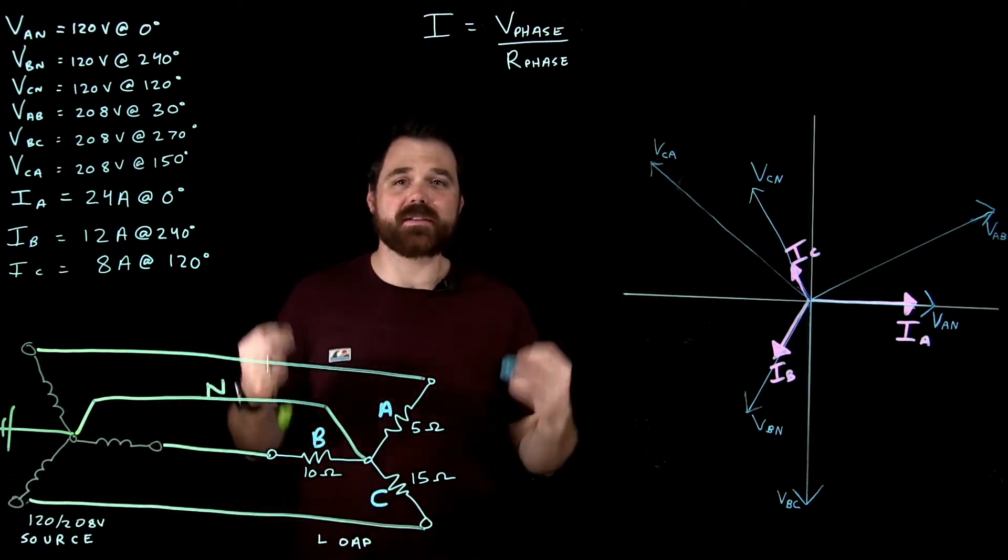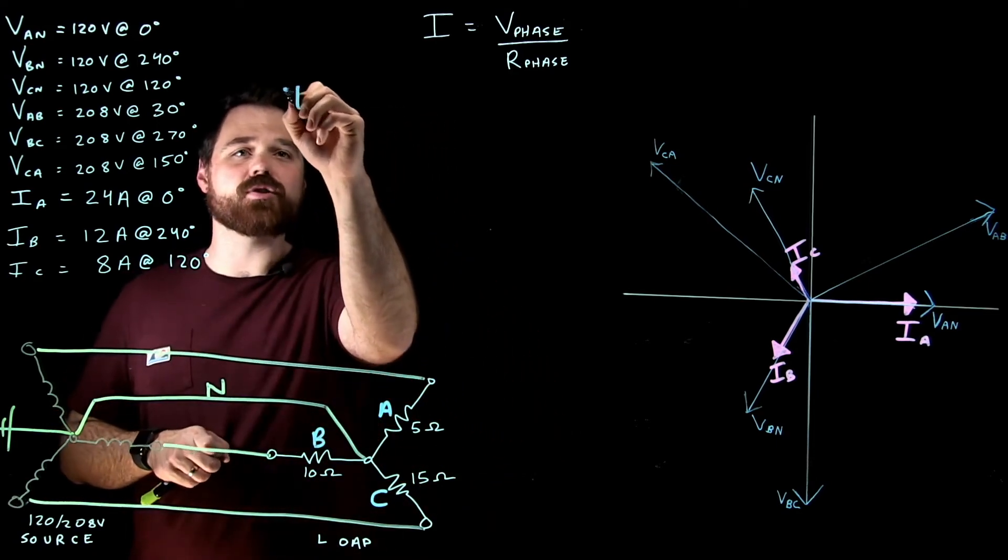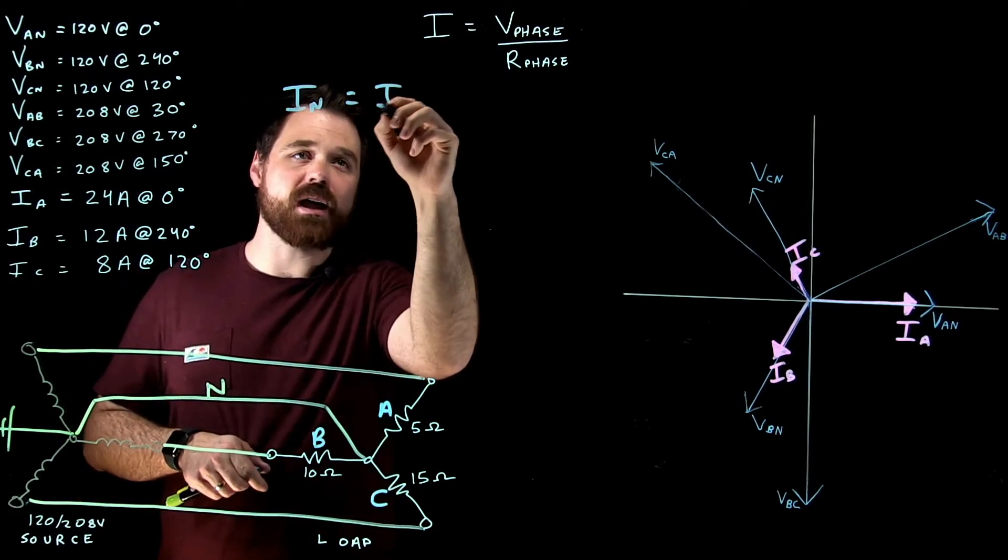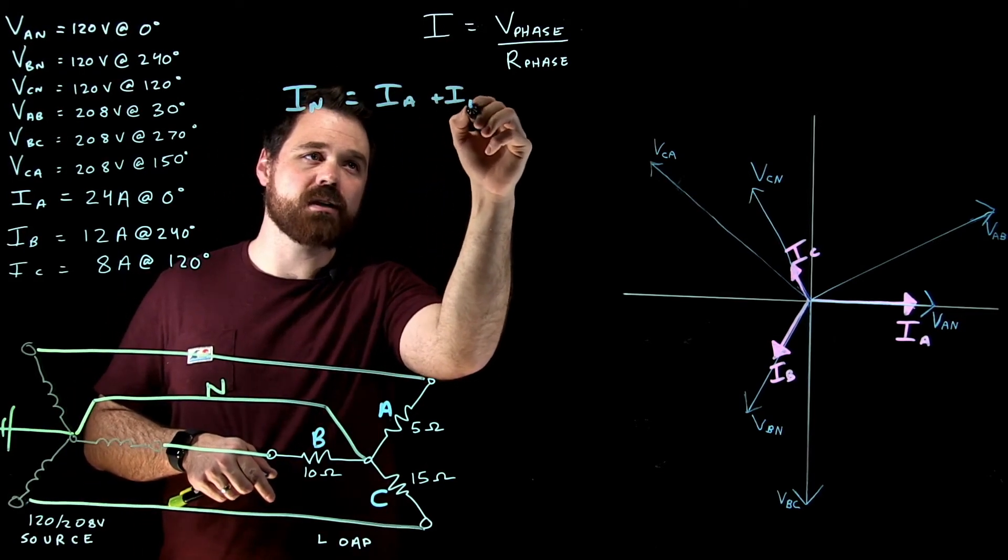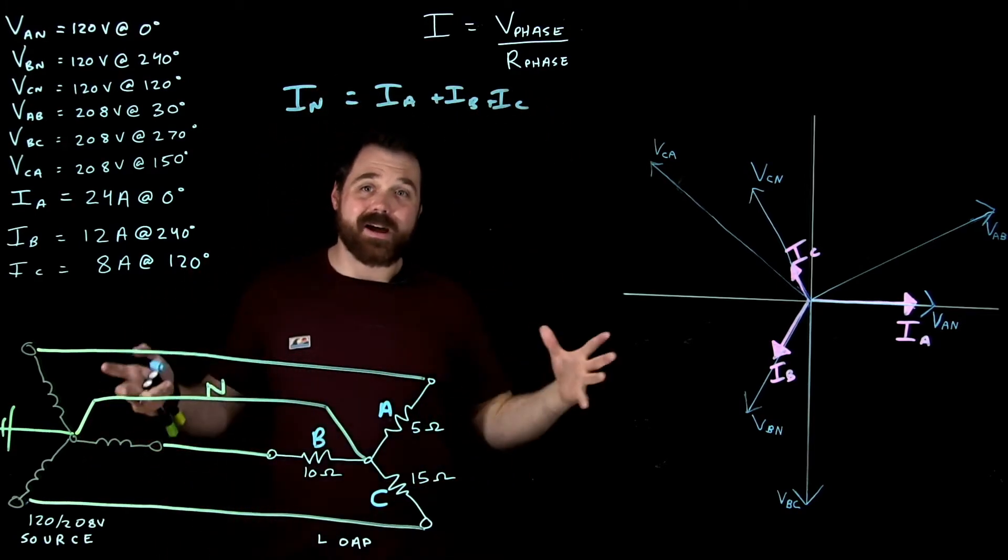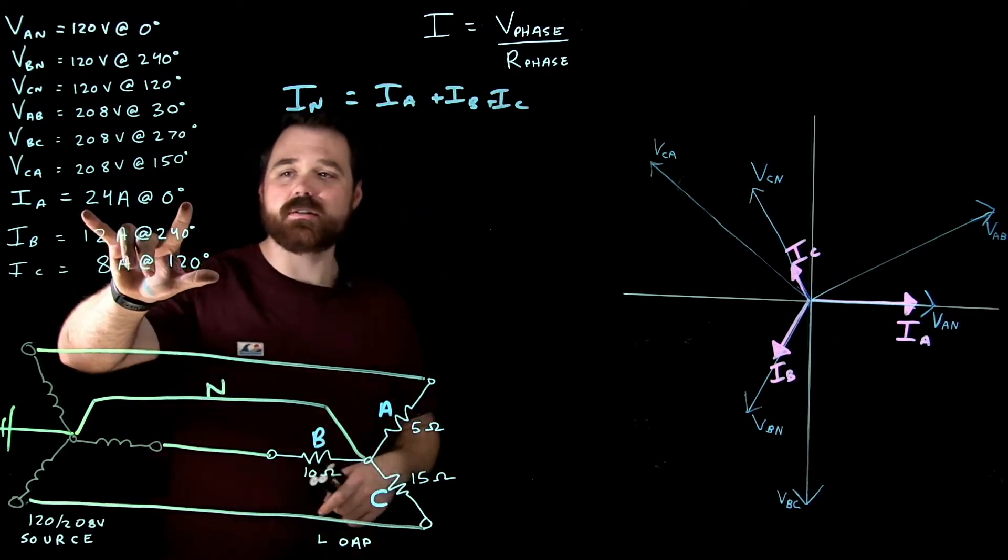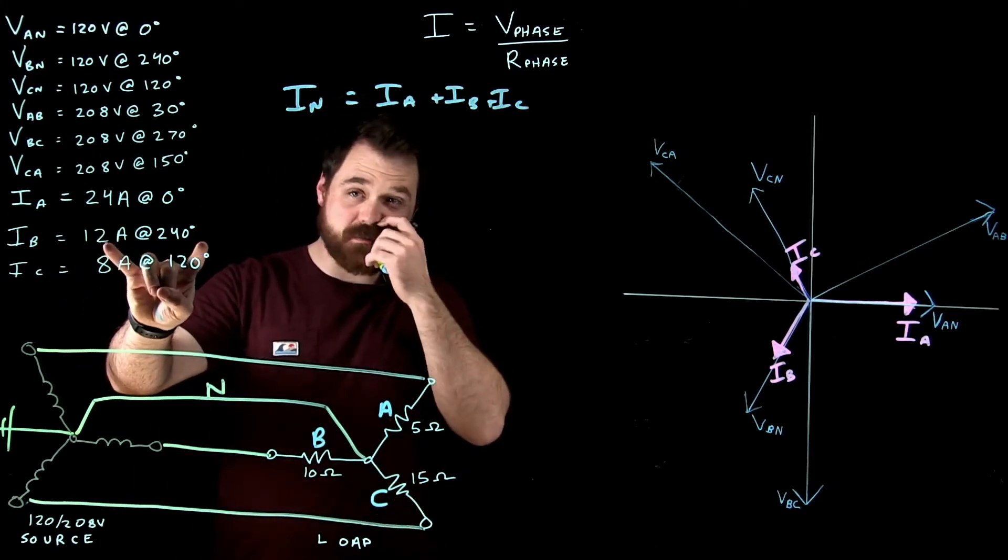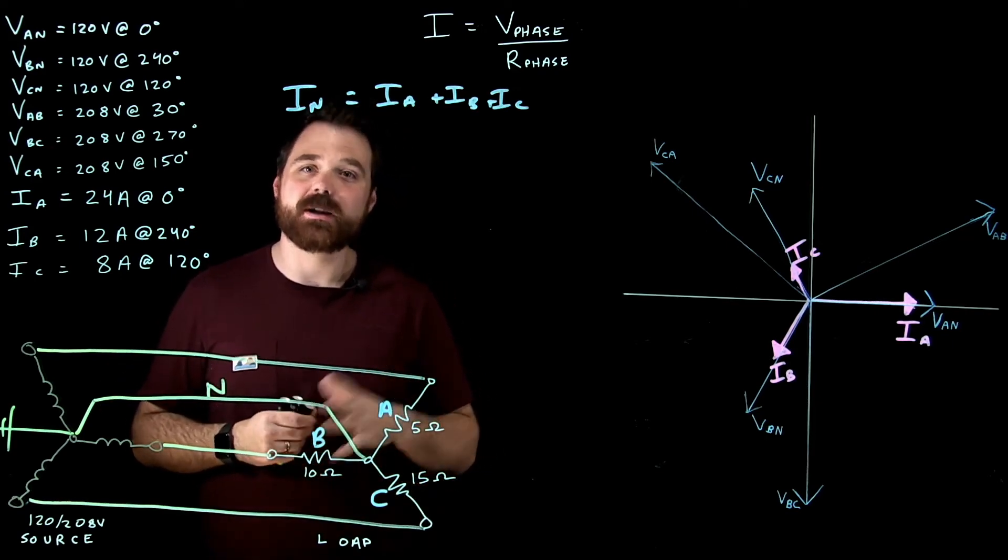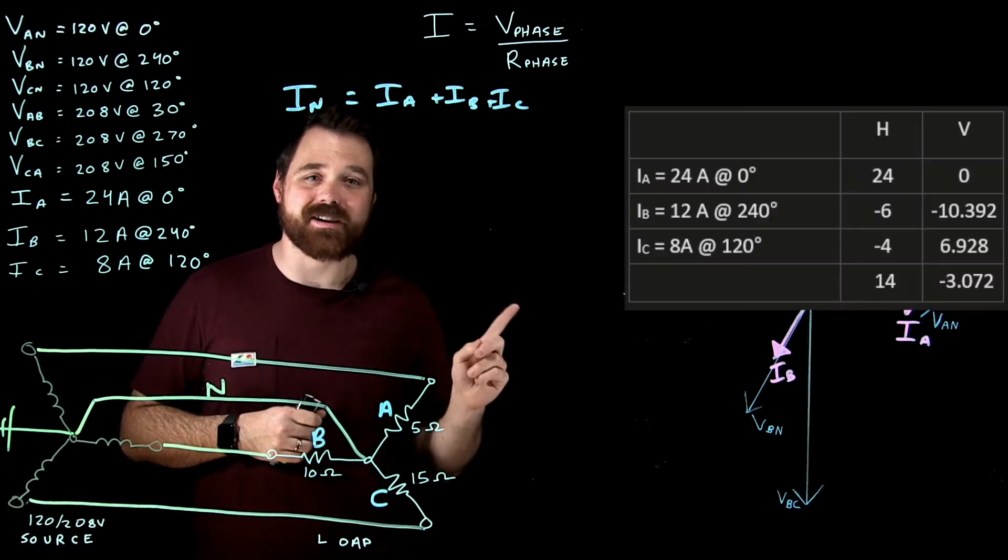So the trick with calculating the neutral current is that I neutral equals IA plus IB plus IC. Now what we end up doing is I end up taking these phasors. 24 amps at zero plus 12 amps at 240 plus 8 amps at 120. And I put them into an HV chart. And I add up all the horizontals, and I add up all the verticals.